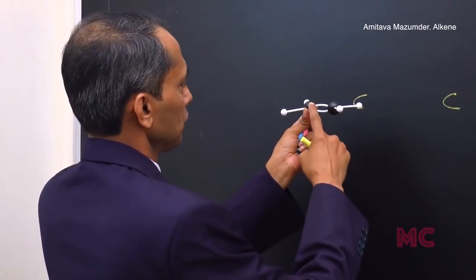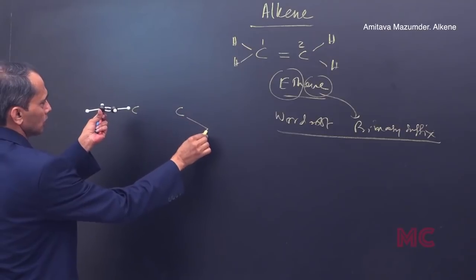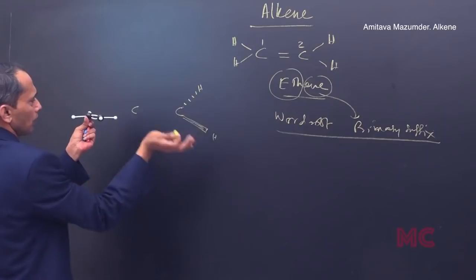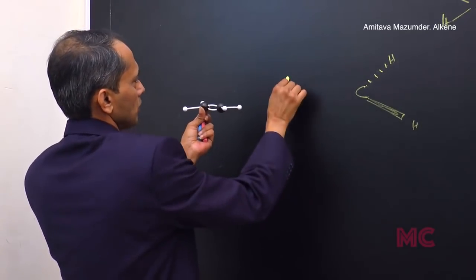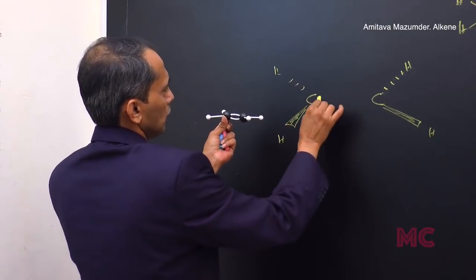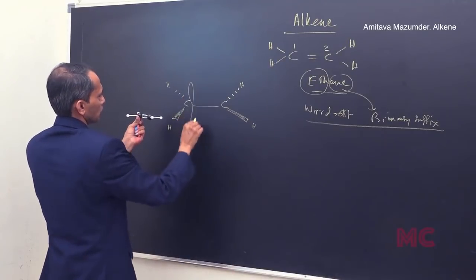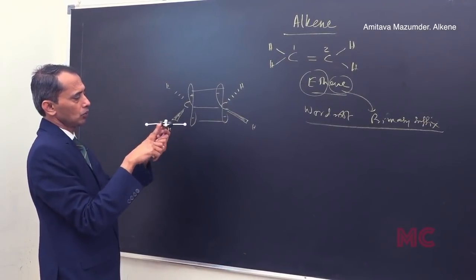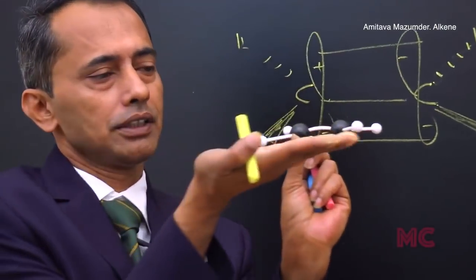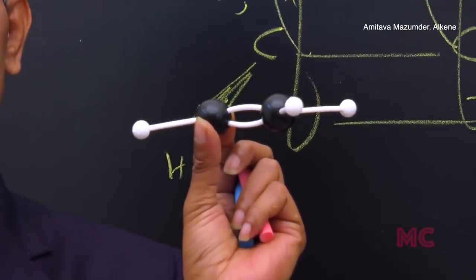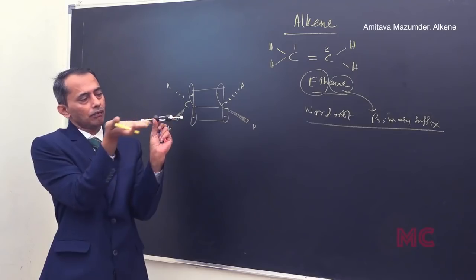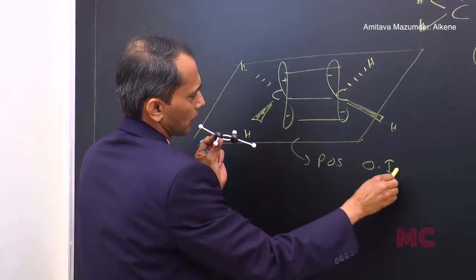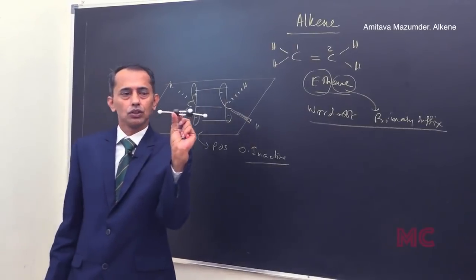In the ethene molecule, we have two carbons and hydrogens — some pointing towards the viewer, some away from the plane. This hydrogen is in front of the plane and this one is behind. There is one sigma bond and one pi bond (p2 + p2 overlapping). All carbon and hydrogen atoms are present in the same plane, making it a planar molecule. Therefore the molecule is optically inactive because this plane is a plane of symmetry.